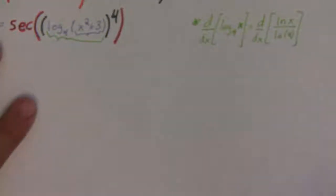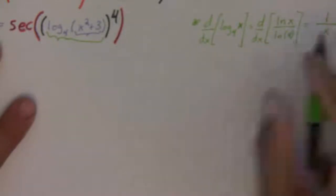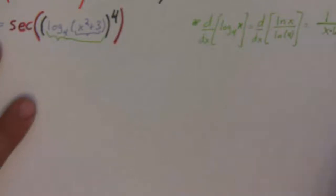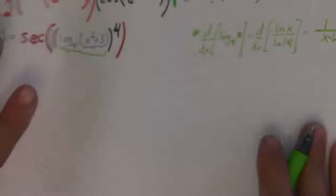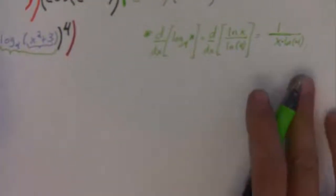And, so, we'll notice the natural log of 4. That's just a constant. So, this is really just 1 over. Instead of being 1 over x, which is the derivative of natural log, you have 1 over x. And, then, natural log of 4 in the denominator. Right there.